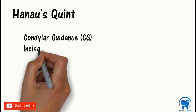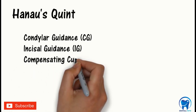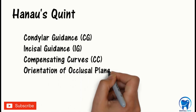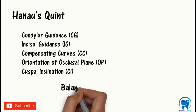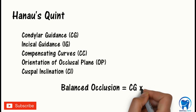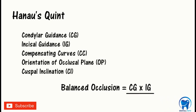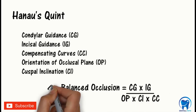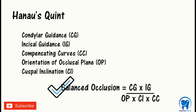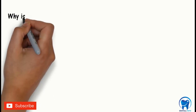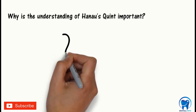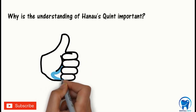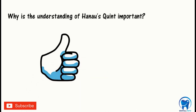Now let's discuss about the Hanau's Quint. It consists of the condylar guidance, incisal guidance, the compensating curves, the orientation of occlusal plane, and the cuspal inclination. There is an important formula which needs to be remembered: balanced occlusion equals condylar guidance multiplied by incisal guidance, divided by the occlusal plane, cuspal inclination, and compensating curves. Understanding the Hanau's Quint is important since it helps in achieving balanced occlusion for the complete denture, which provides patient satisfaction as well as improves the masticatory efficiency, thereby improving the quality of life.